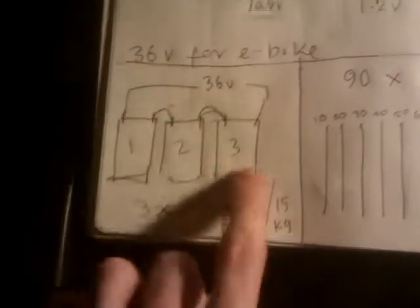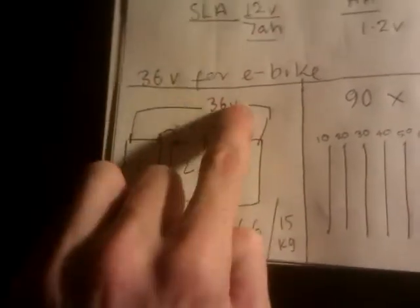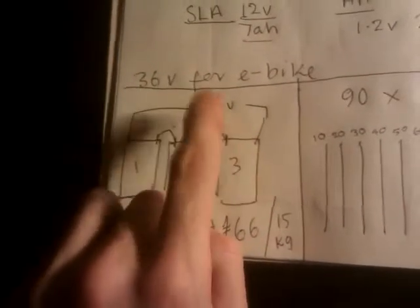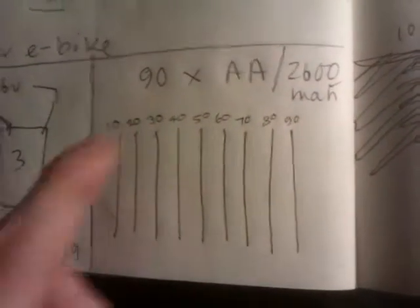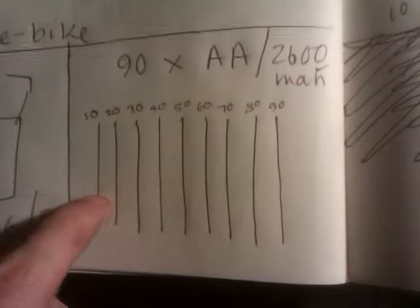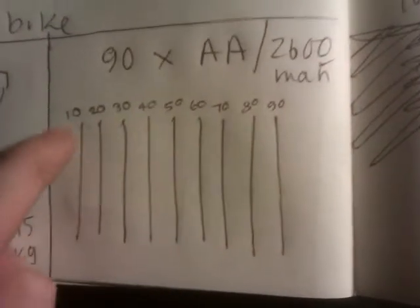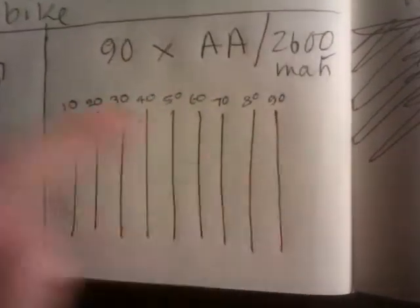So the options are like this. For a scooter you've got three sealed lead acid batteries and in series they add up to 36 volt at 7 amp hours or thereabouts. To make that out of AA batteries you would need 90 of them. So these represent 10 of them in a line. 90.